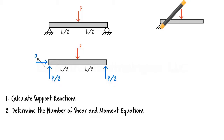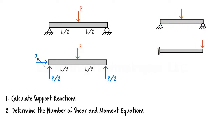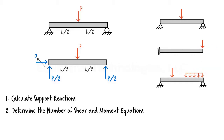Let's examine several cases. How many pairs of shear and moment equations do we need for this beam? The load divides the beam into two segments, so we need two sets of equations — one for the left segment and another for the right segment. In another case, the load does not divide the beam into multiple segments as it is applied at the tip of the beam, so we only need one shear equation and one moment equation for the entire beam. Here, the loads divide the beam into three segments, so three pairs of equations are needed.